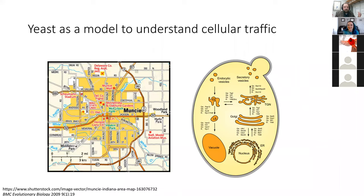My lab uses yeast as a model to understand cellular traffic. But instead of tracking how cars or bikes get from point A to point B, we study how proteins get from the place where they're made in the cell to the place where they ultimately function. Protein molecules accomplish the business of life — they're responsible for movement, reproduction, metabolism, and processing information. Many diseases like diabetes and elevated cholesterol are caused by dysfunction of protein molecules inside our cells. One way proteins can exhibit dysfunction is by failing to reach their appropriate cellular destination.